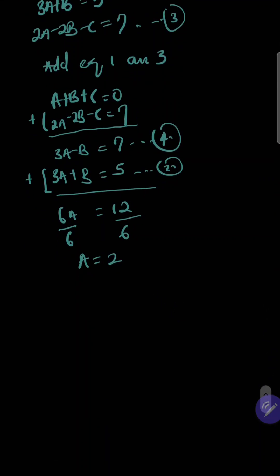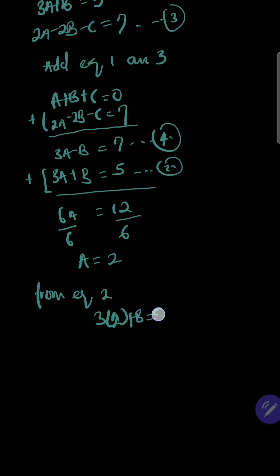Now we need to get B. From Equation 2, we have 3A plus B equals 5. Substituting A equals 2: 3 times 2 is 6, so B equals 5 minus 6, which gives B equals negative 1.